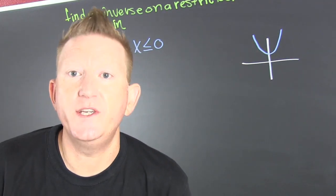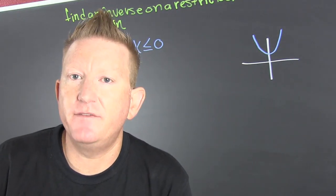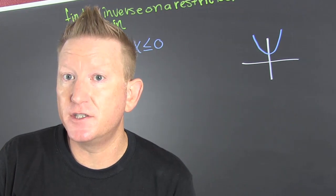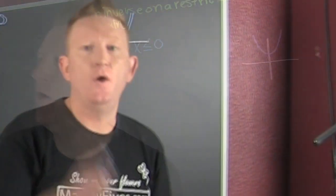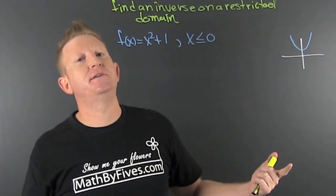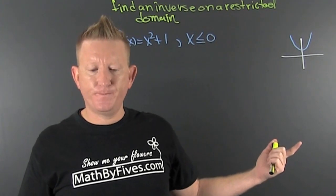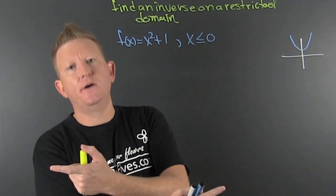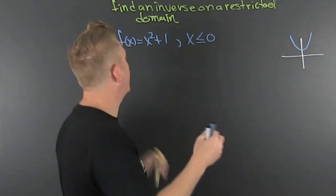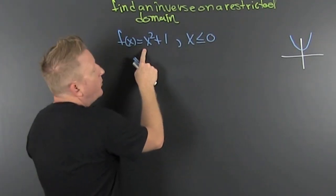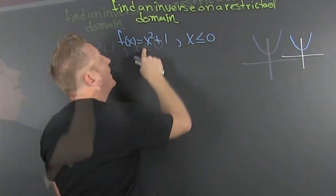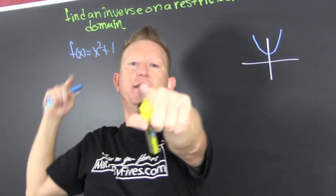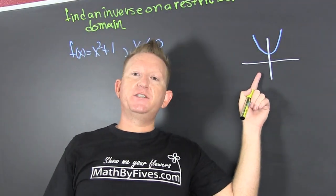Previously on math class we stated that you can't have an inverse function if your function's not one-to-one. So we're trying to find a function inverse when the function is not one-to-one. I'm talking about this guy. This is not a one-to-one function.